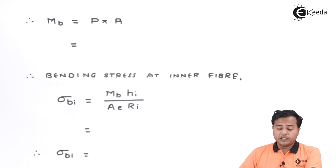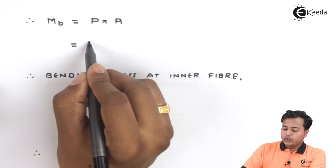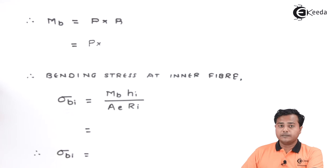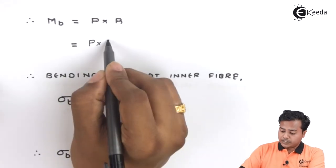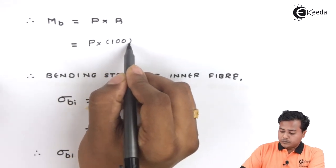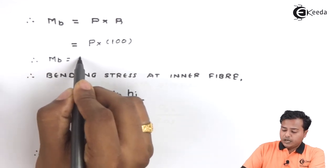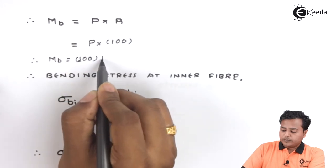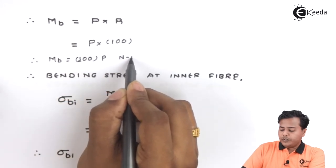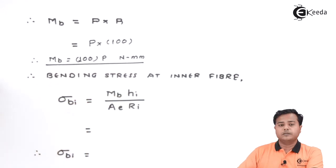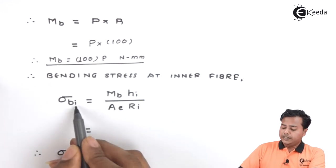We know that bending moment here will be equal to the force into the radius. Radius is nothing but this mean radius and the value of force P is unknown. The mean radius that we have obtained is 100. And hence bending moment in this case becomes 100 times the P. Newton millimeter.